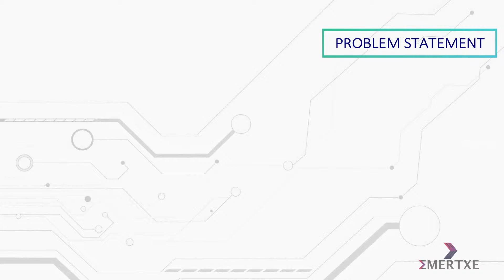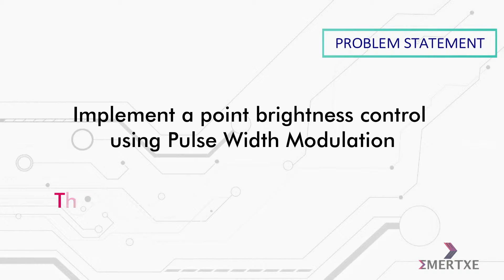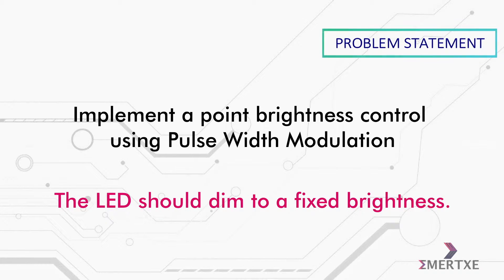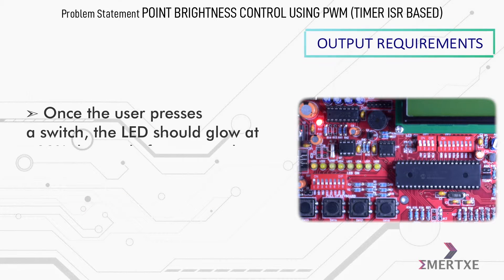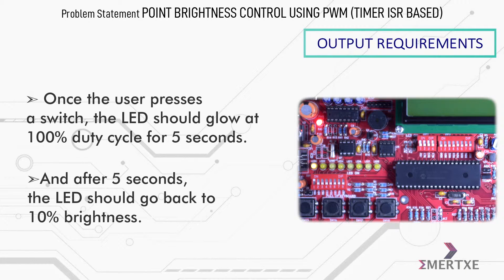In this assignment, you have to implement a point brightness control using Pulse Width Modulation. The LED should dim to a fixed brightness. Once the user presses a switch, the LED should glow at 100% duty cycle for 5 seconds, and after 5 seconds the LED should go back to 10% brightness.